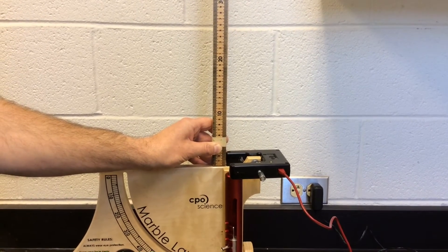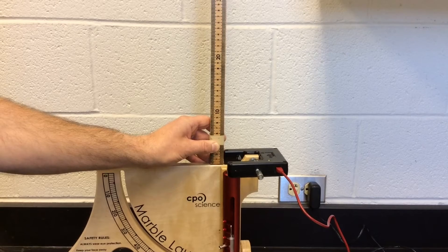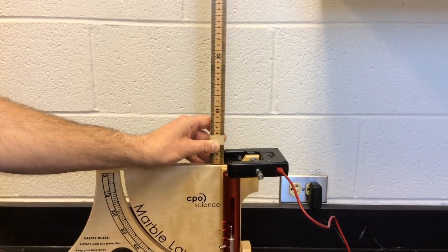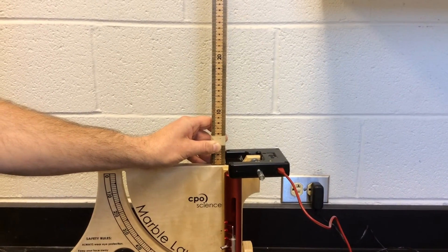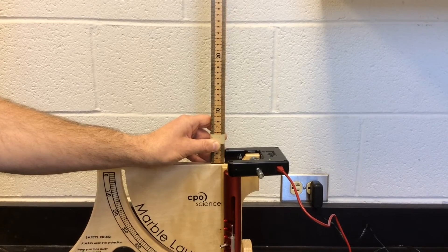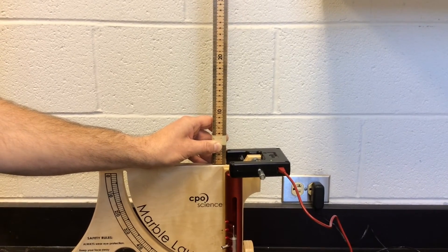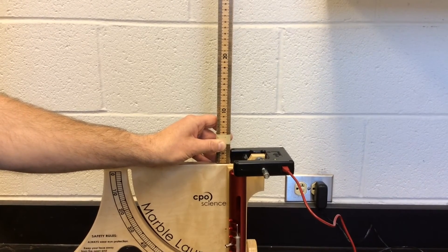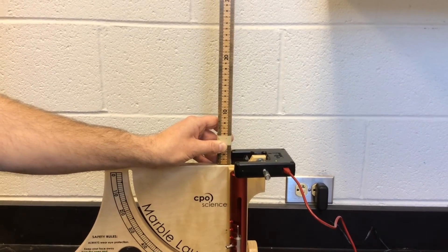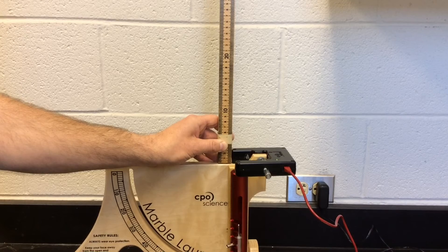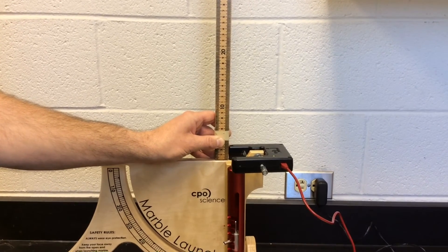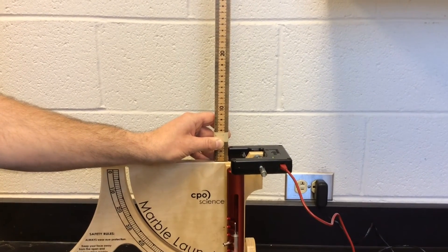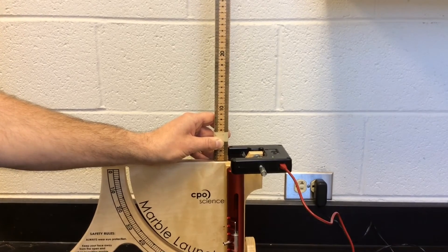A second better way to do it is if you have your phone with a slow motion camera. There's also an app online called Huddle which you can download. That allows you to slow down your video and when you launch using slow motion you can view the video, look at where the marble is as compared to the meter stick and see how high your marble went with a little bit more accuracy.